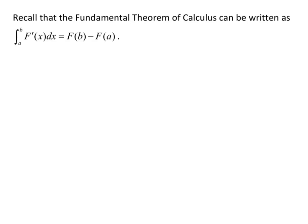Recall that the fundamental theorem of calculus can be written as the integral from a to b of F prime of x dx equals F of b minus F of a. So what this is telling us is you take the antiderivative of the integrand function, and then you plug in your upper bound and your lower bound and subtract.